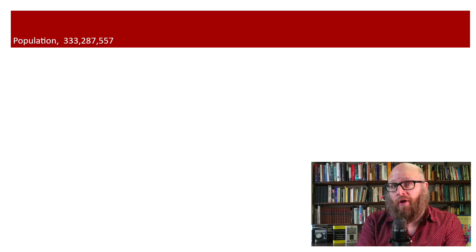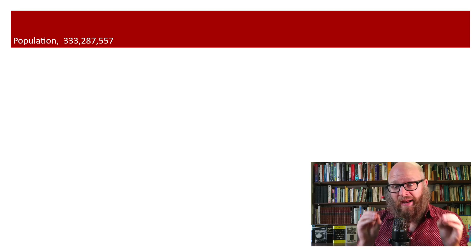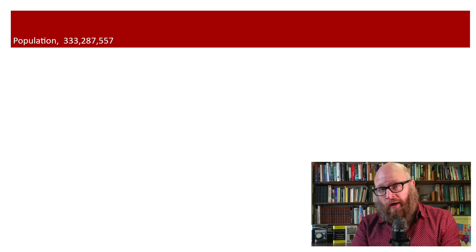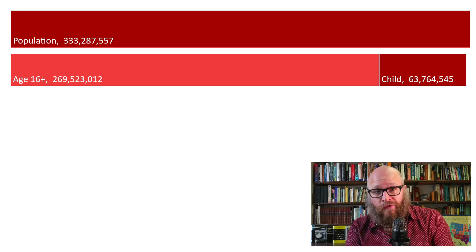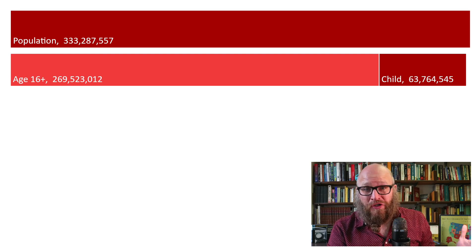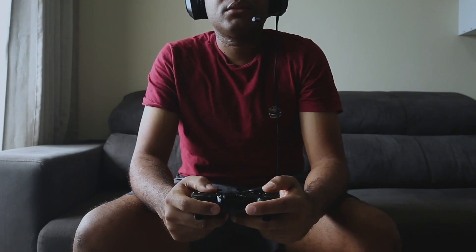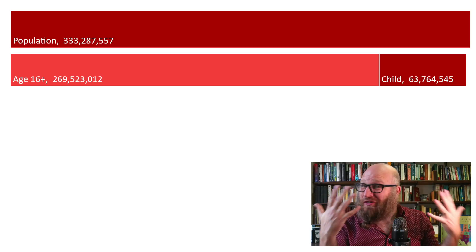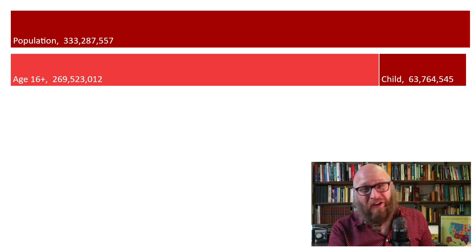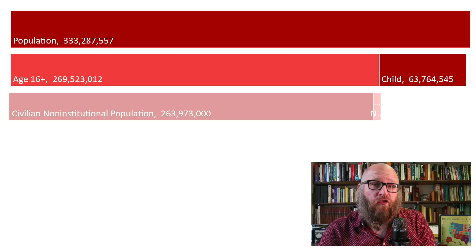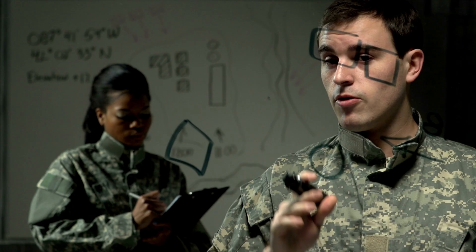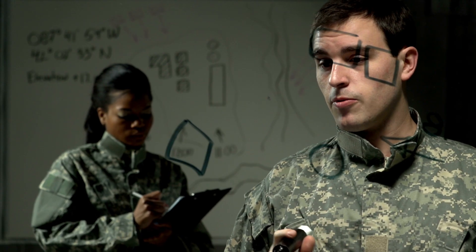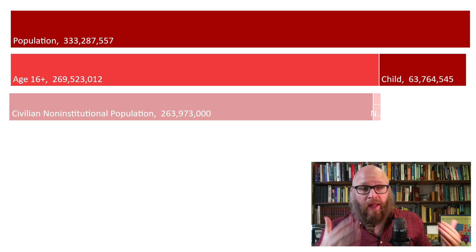In order to get at a more informative unemployment rate, we want to focus on the proportion of the population most relevant to the job market. First and foremost, we don't want to include children under the age of 16. We also look at the civilian non-institutionalized population, so those who are in prison, in full-time nursing care, or on active duty in the military are not part of the dynamic labor market.